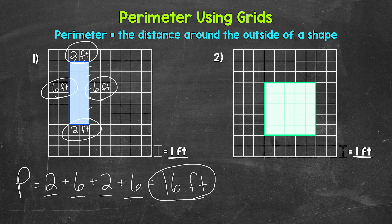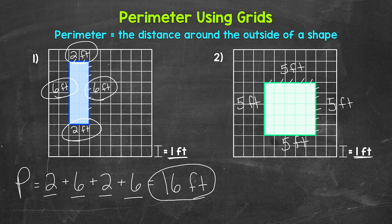Let's try another example and move on to number two. Let's start by figuring out the side lengths and we will start up top: one, two, three, four, five feet. So this side length is five feet. Looking at the opposite side — the bottom — that's going to be the same: five feet as well. As far as the other sides: one, two, three, four, five feet. So this side length is five feet, and the opposite side length is the same.